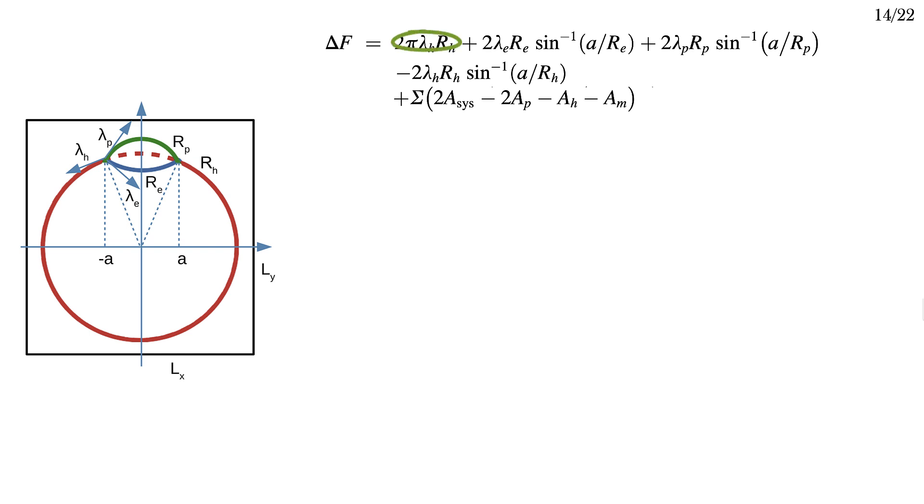We start by writing the free energy like this. The first term is the free energy of the rim of the hemifusion diaphragm given by its length times the line tension lambda h. The fourth term subtracts off the length of the HD rim that's deleted by inserting the pore. The second and third terms give the additional line tensions associated with the rim pore and edge type interfaces.